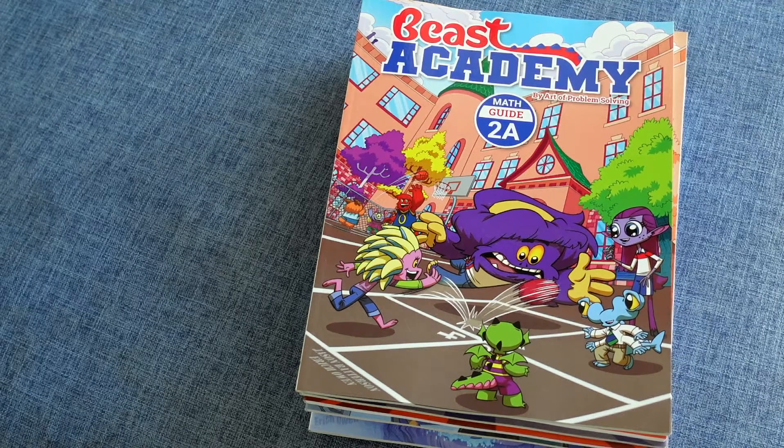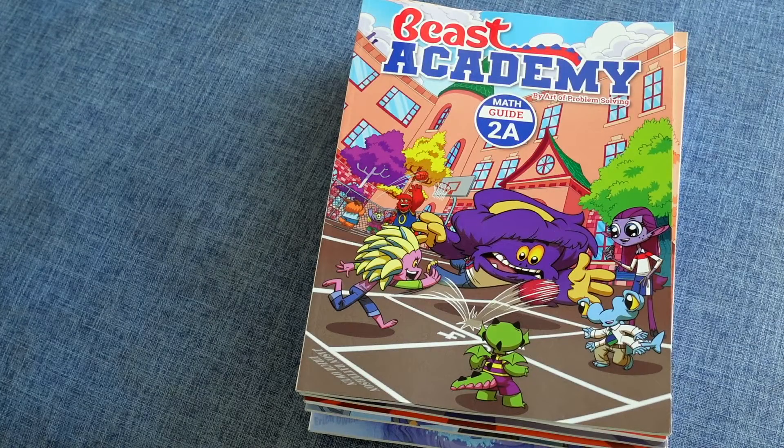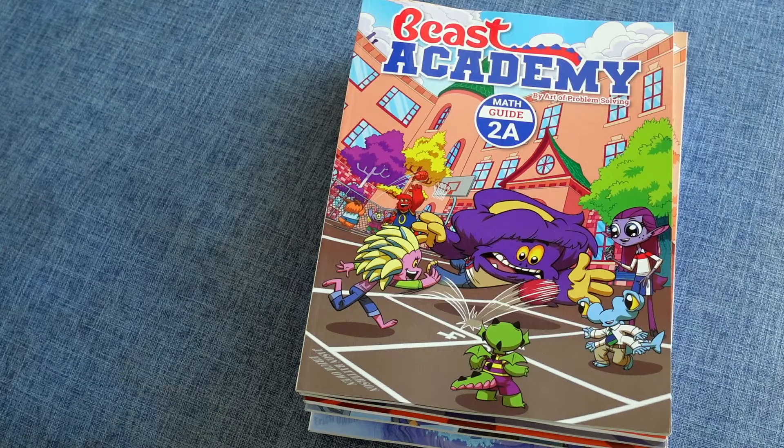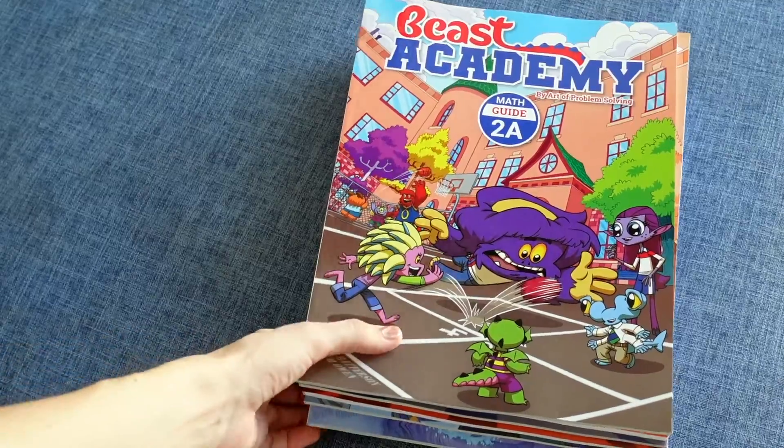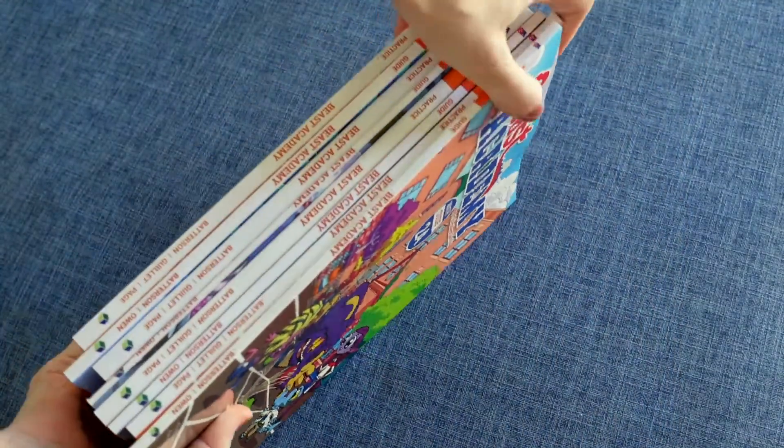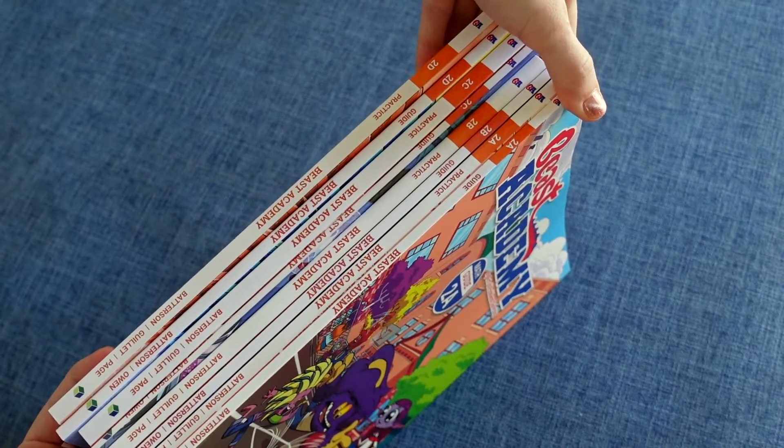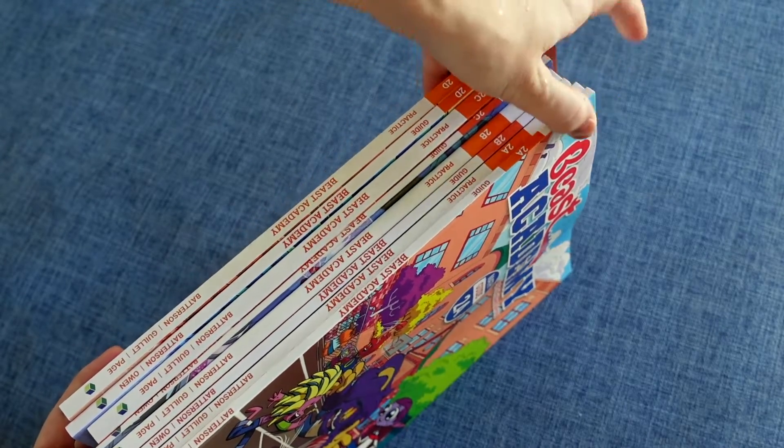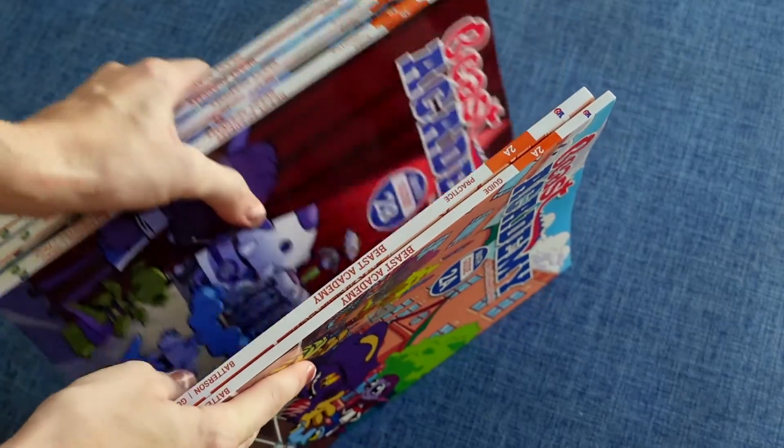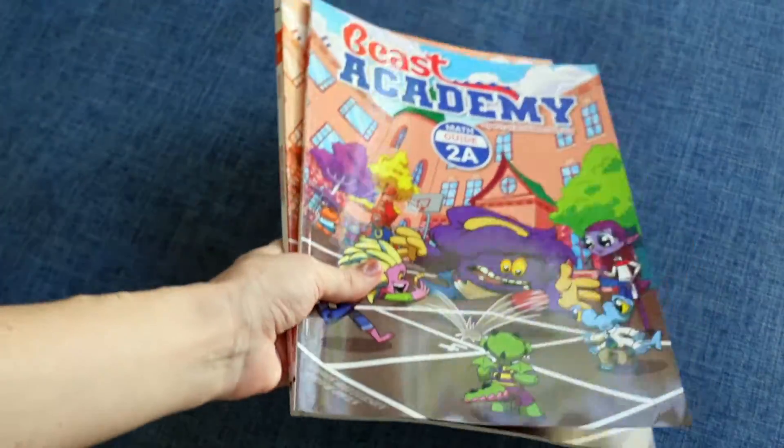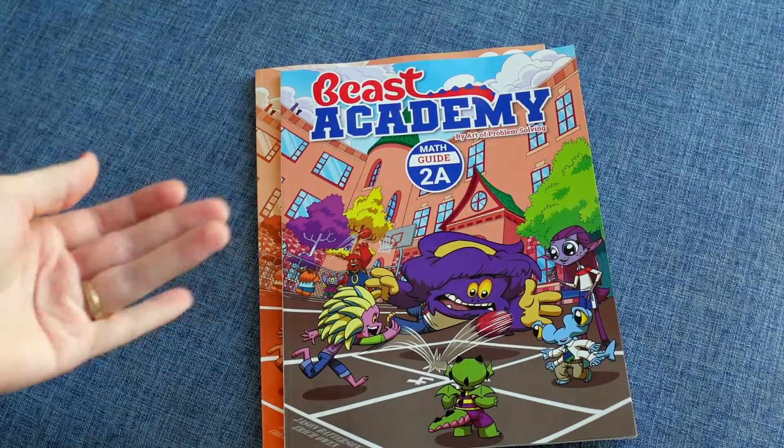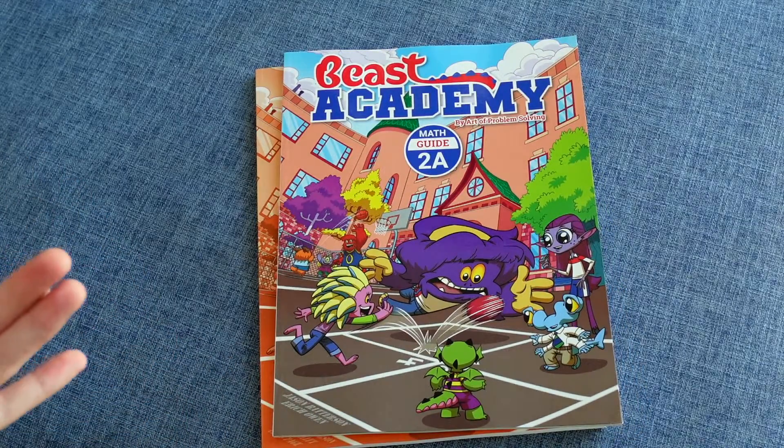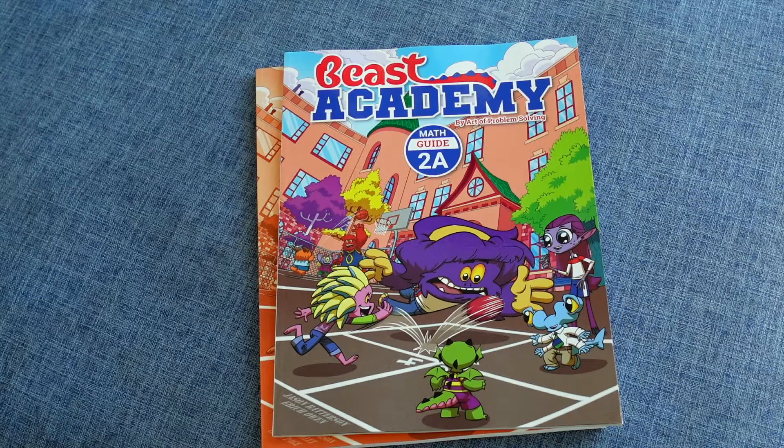Today I'm going to be giving you a thorough look inside of Beast Academy Level 2. Level 2 is recommended on their website for ages 7 through 9 approximately. The entire level consists of 8 books which you can see here. There are 4 guidebooks, A through D, and then there are 4 practice books as well. So each guidebook has its own practice book associated with it. I'm going to give you a look inside. Beast Academy is known for a strong conceptual and problem-solving based approach to math. It's not a very traditional math curriculum, and that's going to become more obvious as we look inside it.